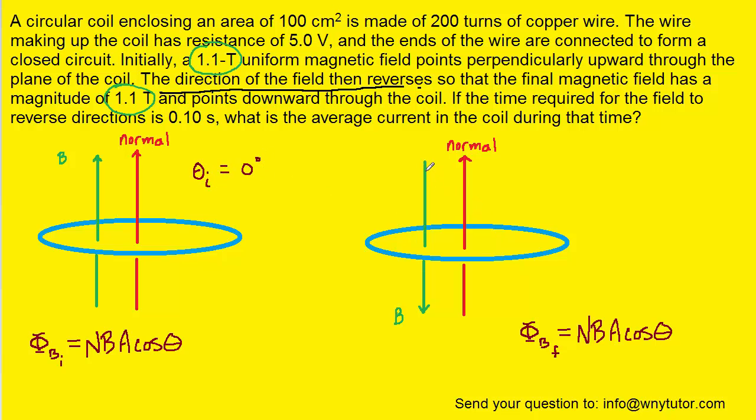On the other hand, in the final scenario, the magnetic field line and the normal line point in completely opposite directions, so the final angle will be 180 degrees. As for the area, that was given to us directly in the question as being 100 centimeters squared.